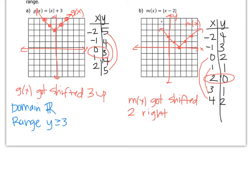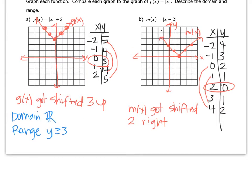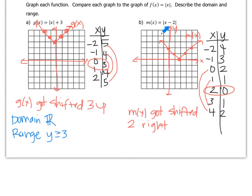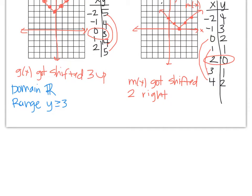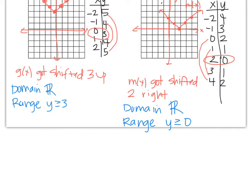If it's minus inside the absolute value, it shifts right; if it's plus, it shifts left — that might be a little counterintuitive and we'll talk about that in class. The domain is all real numbers, because there's no number I can't plug in. The range: the vertex is at (2, 0), so all y-values are greater than or equal to 0. The range is y ≥ 0.